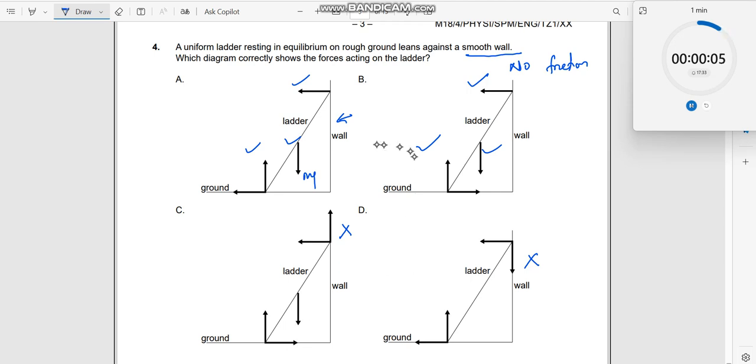But these two are already discarded. Amongst these two, which one is the right one? Here, if you see, it is shown like this over here. This has a friction. Now if the ladder tries to move like this,